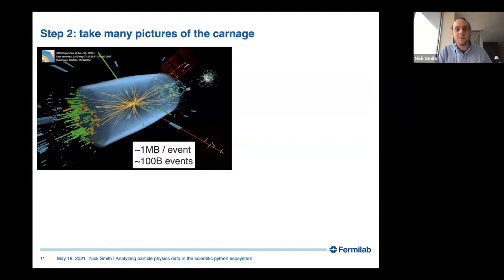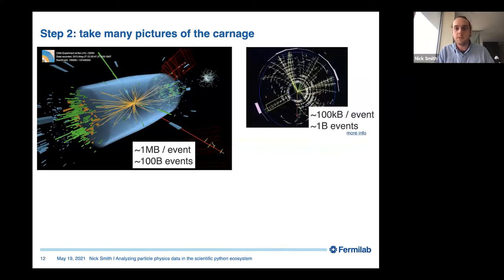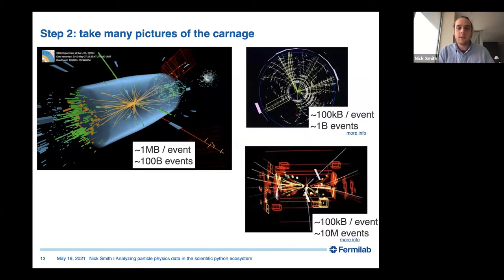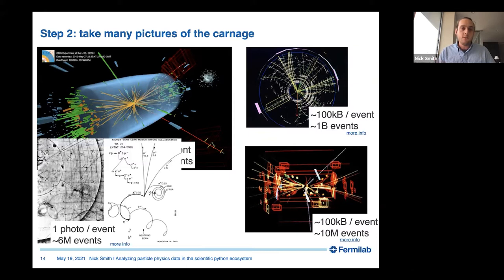Step two: take pictures of the carnage. My experiment takes one-megabyte pictures per collision event and we've collected about 100 billion events so far — that's about 100 petabytes of raw data. Previous experiments such as the one at Fermilab collected smaller data with far fewer events. Going back to the early 1980s, they only collected 10 million events. Going all the way back to the first bubble chambers, you literally took a photo of particle trajectories and hand-analyzed them. It's amazing that six million such photos were hand-analyzed — big data used to be a lot harder than it is now.